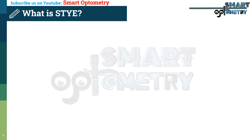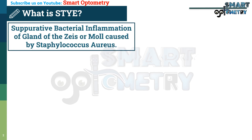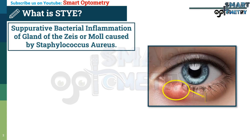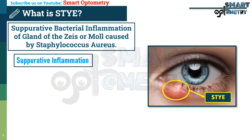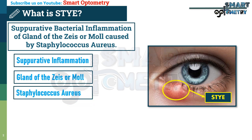What is external hordeolum or stye? A stye is an acute suppurative bacterial inflammation of the gland of Zeis or Moll, caused by Staphylococcus aureus. Three key things to remember from this definition: it is a suppurative inflammation, it is associated with the gland of Zeis or Moll, and it is caused by Staphylococcus aureus.